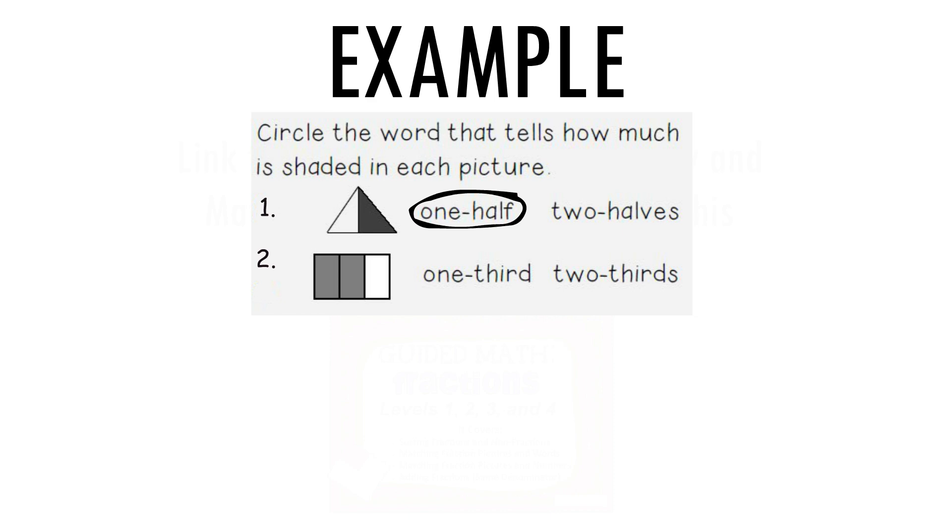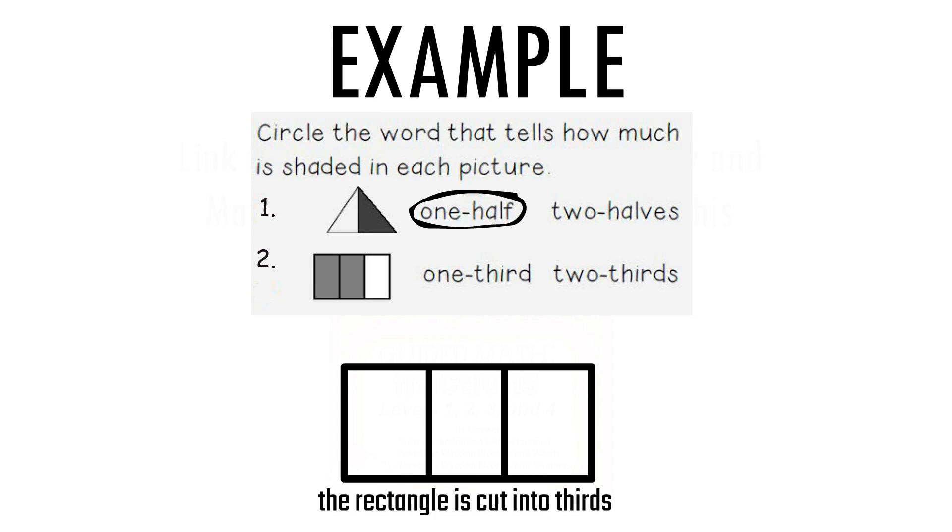What about number two? Here I see a rectangle that is cut into three equal pieces or thirds. Two out of the three pieces are shaded. This tells me that two thirds of the rectangle is shaded. So that is our answer.